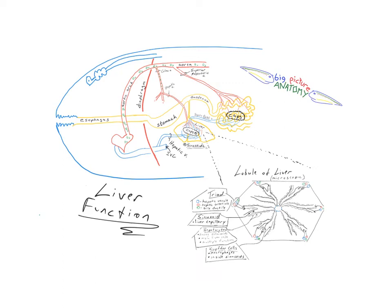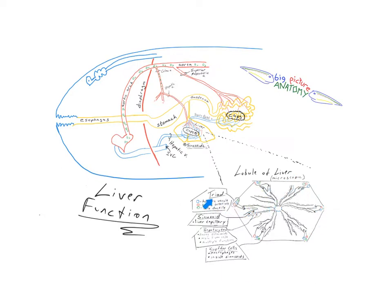This is big picture anatomy with a look at liver function. First we're going to take a look at the liver in place in the body and why it has a dual blood supply, and then we're going to take a look at the microscopic structure within the liver and how the cells work on that dual blood supply.